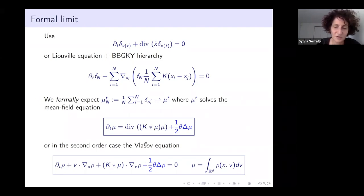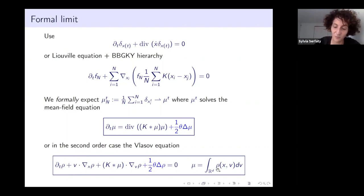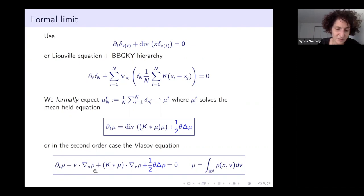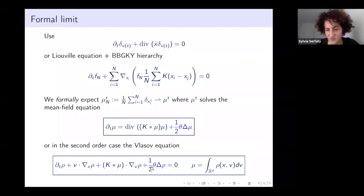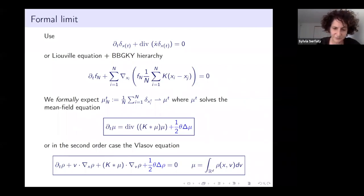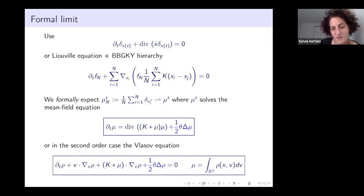This is just saying the density of particles is transported by the velocity, which is the average force generated by the density itself, plus possibly some diffusion. If you're interested in Newton's law—the second-order system—you should look at the kinetic formulation: an equation for rho, the density of particles having position x and velocity v, which naturally solves a Vlasov-type equation: d_t rho + v · grad rho + the force term · grad_v rho, plus possibly diffusion, where mu is the marginal of rho in the x variable.